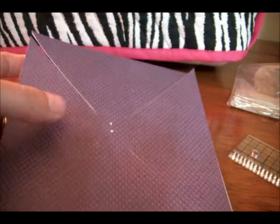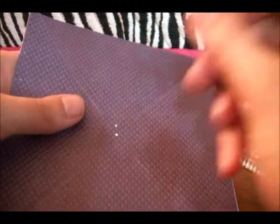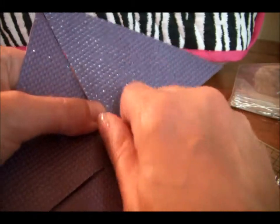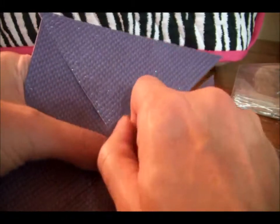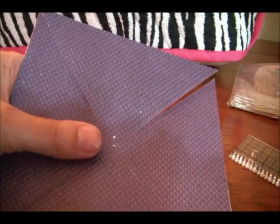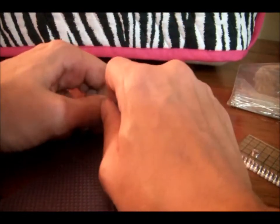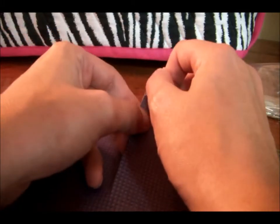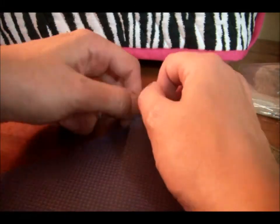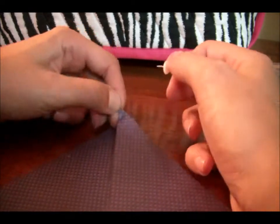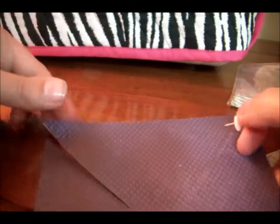We are going to punch a hole with a pushpin right here in the center. I want a thin enough or a small enough hole that it doesn't take too much away from the pinwheel. Then I'm going to use the pushpin, and I'm going to push little holes into every other corner. You can use a hole punch if you want.